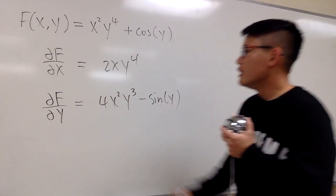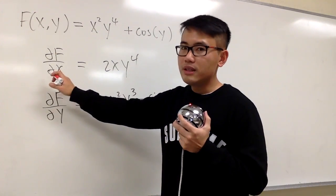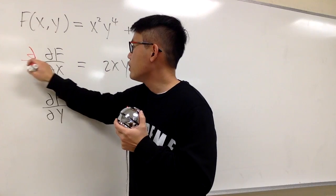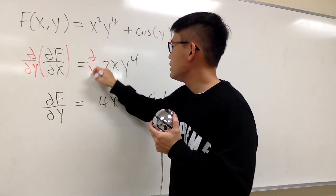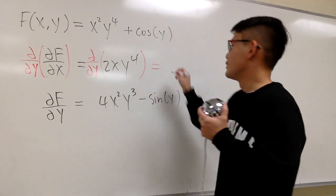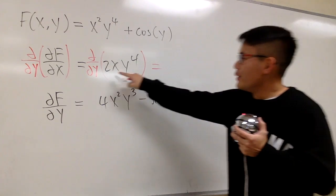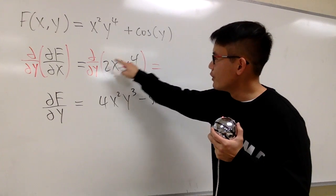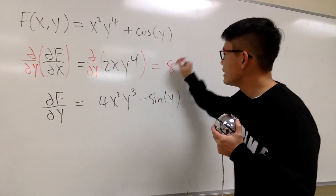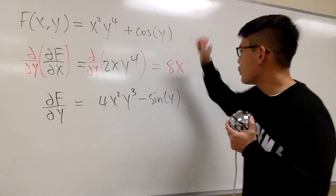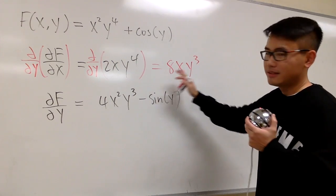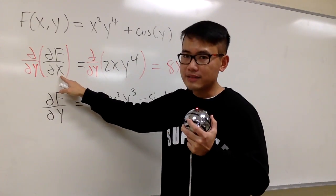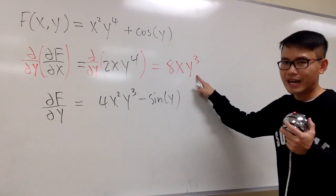Let me show you. We already differentiated with respect to x. So now let's do the partial with respect to y. For this term, bring the 4 to the front: 2 times 4 is 8, and we have x. Subtract 1 from the exponent, so we get y to the third power. This is the partial with respect to x first, and then with respect to y, giving us 8xy³.